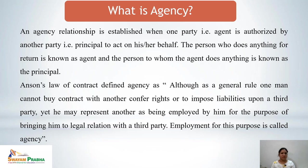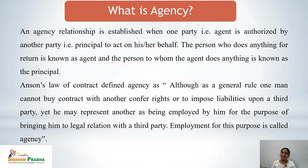First, it is important to know what is agency and why agency is needed. As we all know, today's modern business is becoming so complex that it is not possible for an individual to carry all the affairs of the business alone — he needs someone's help, and that someone creates the need of the agency. An agency relationship is established when one party, the agent, is authorized by another party, the principal, to act on his or her behalf. The person appointed to work at someone's place is known as the agent, and the person who appoints him or her is called the principal.